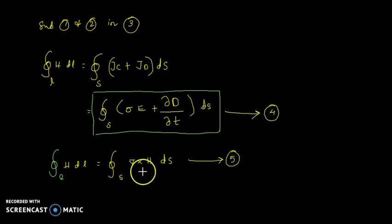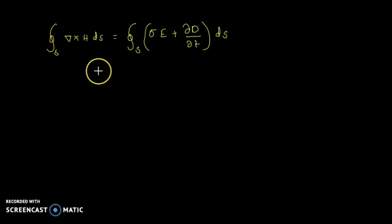We can compare equation number 5 and 4. Surface integral of curl H is nothing but sigma E plus partial derivative of electric field density D. As both are surface integral functions, we can change the integral form and we can equate the function on both sides.